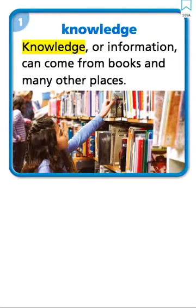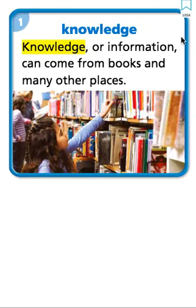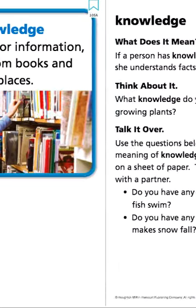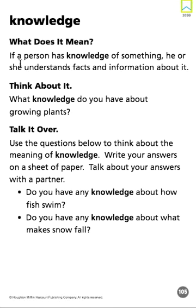Vocabulary word one: knowledge. Knowledge, or information, can come from books and many other places. What does it mean if a person has knowledge of something? He or she understands facts and information about it. Knowledge.